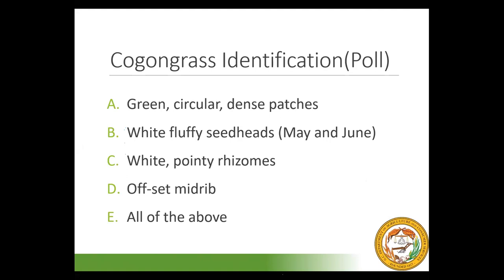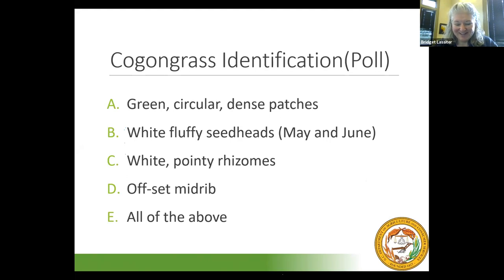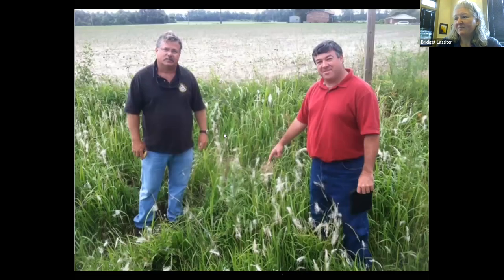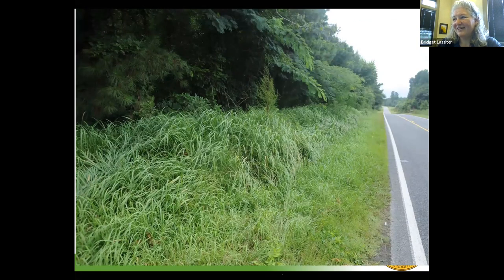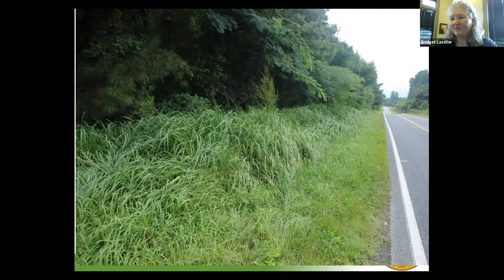So what are you going to be looking for when you leave home or your office today looking for cogon grass? You're going to look for green circular dense patches of green grass, white fluffy seed heads in May and June, white pointy rhizomes when you dig roots out of the ground, and — though I don't think it's a great identification characteristic — many scientists also mention a white offset mid-rib running down the middle of each leaf. Those are all the things to look for driving down the roadside. Here are some pictures of my coworkers: a roadside site in Martin County, a site in the forest in Scotland County, and a site in Pender County where we know for a fact the landowners brought this back from Florida — and the rhizomes were so strong they grew right through a cinder block wall.